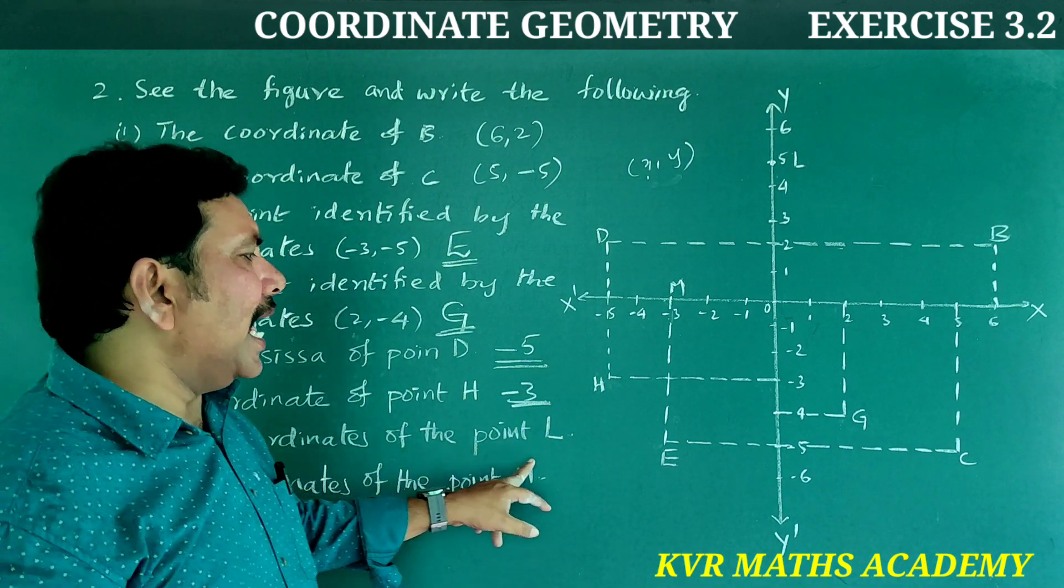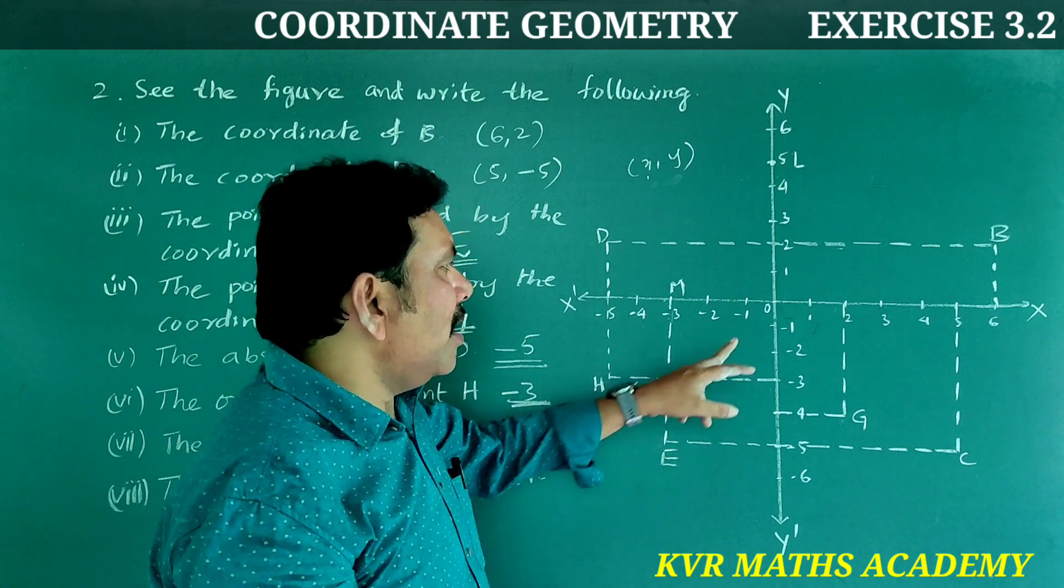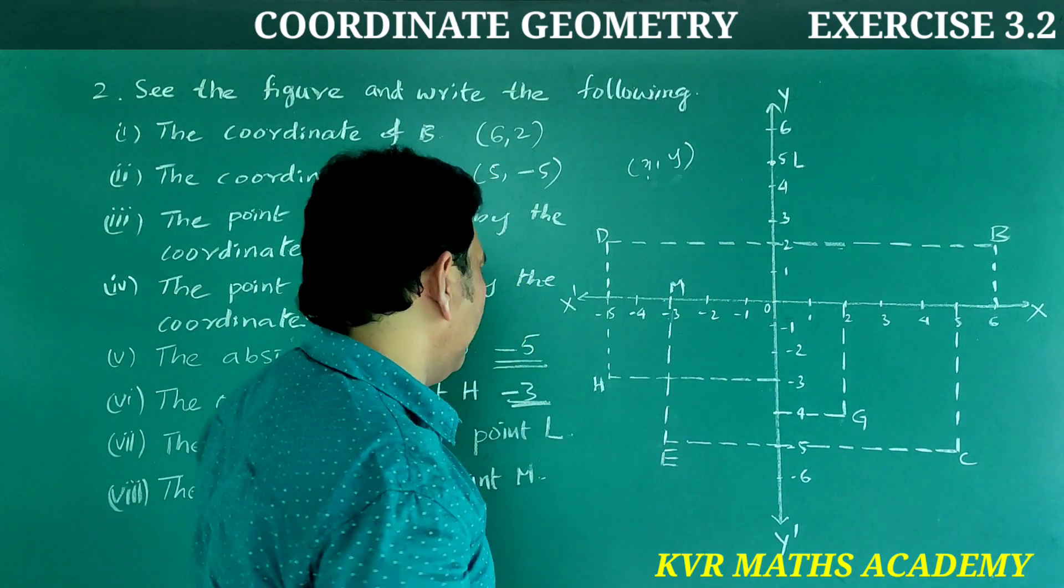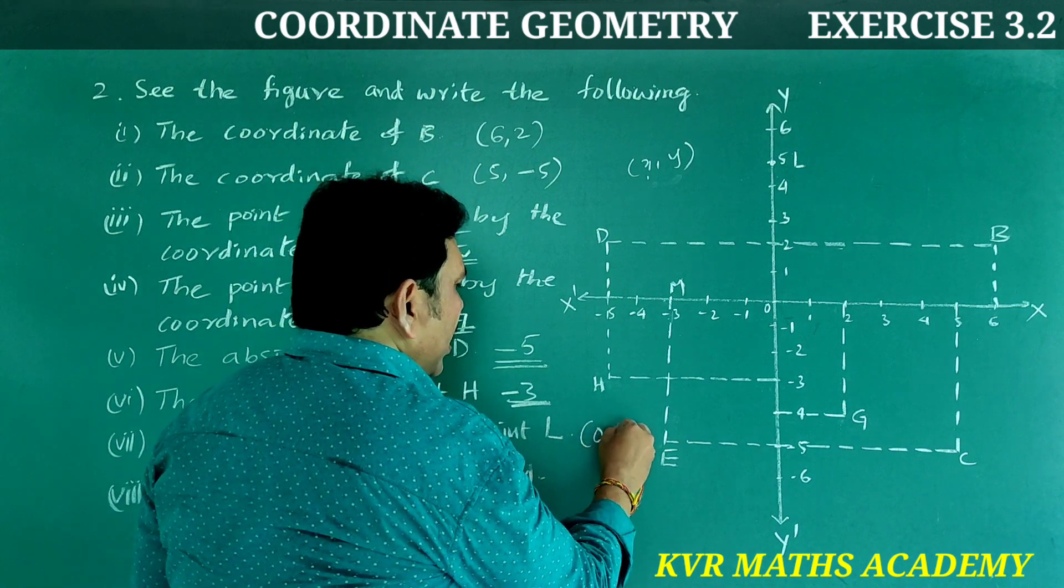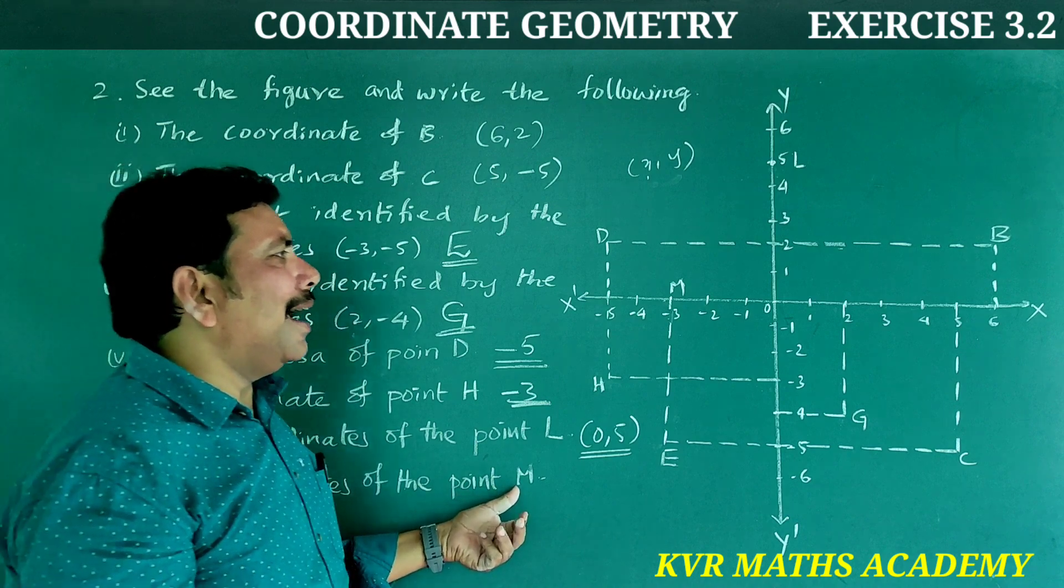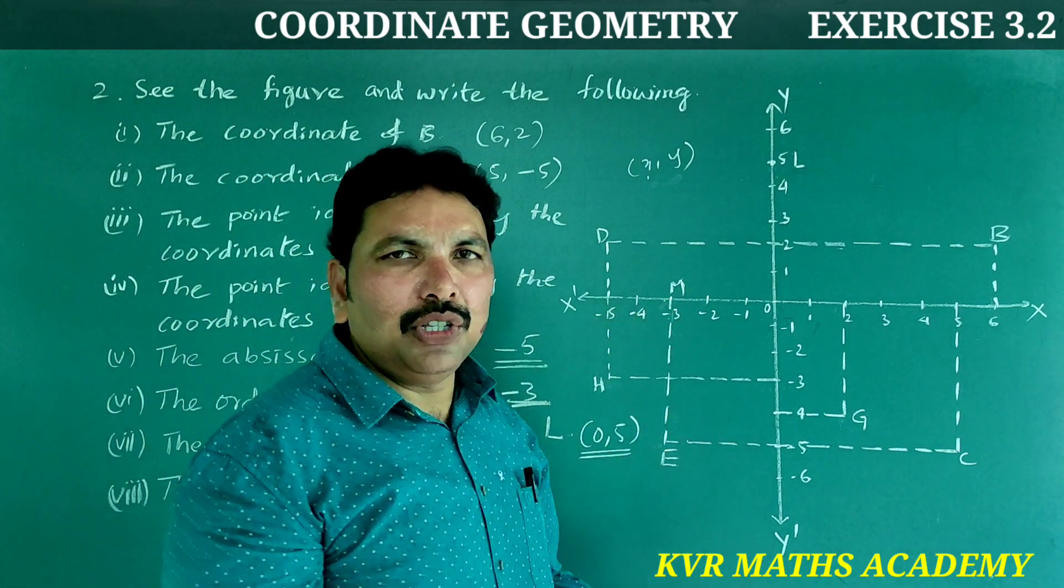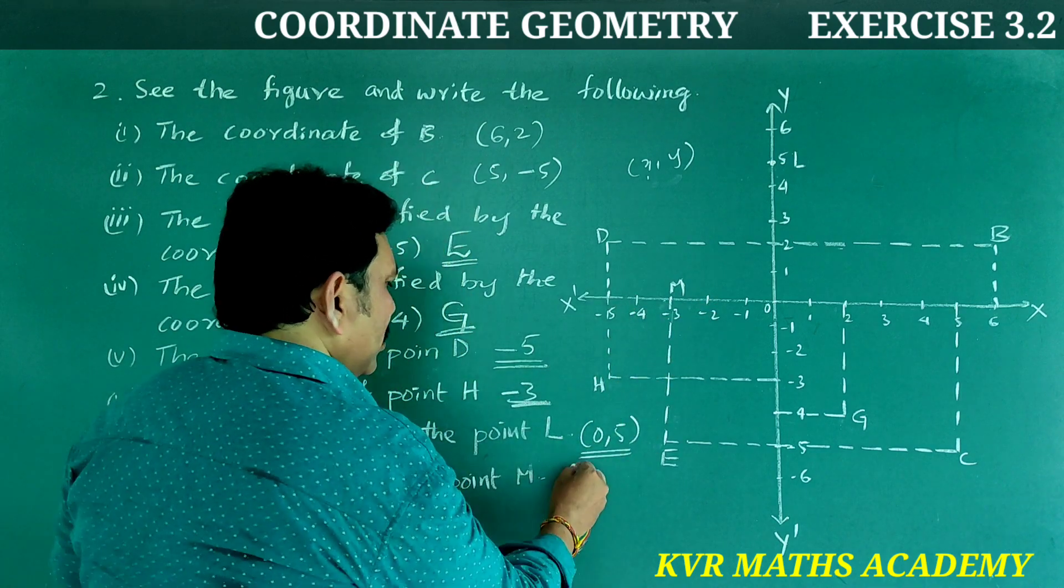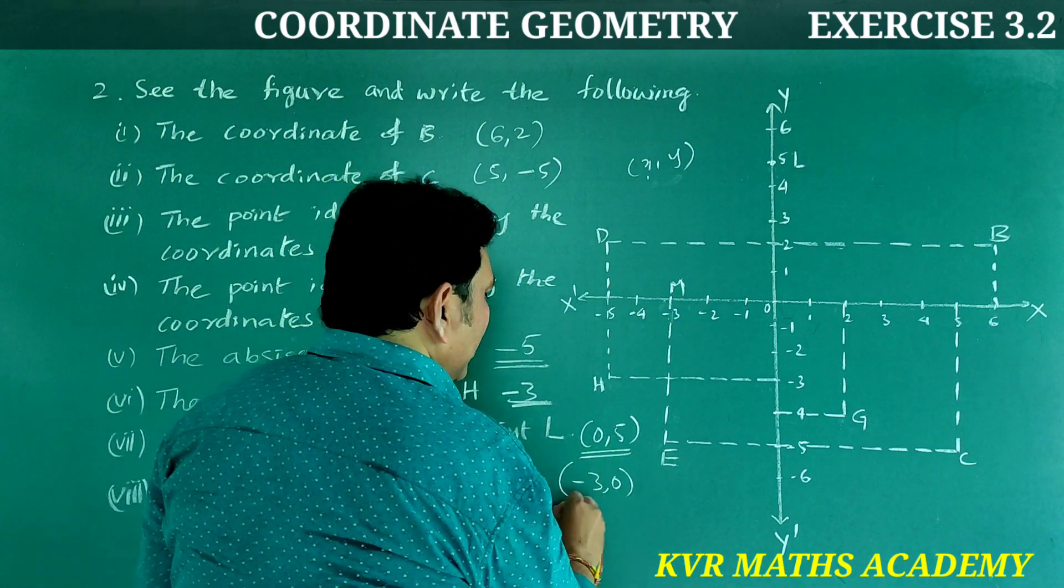Next, the coordinates of point L: L has x at 0, y at 5, so (0, 5). Next, the coordinates of point M: M has x at -3, y at 0, so (-3, 0). Y-coordinate is 0 because it's on the x-axis.